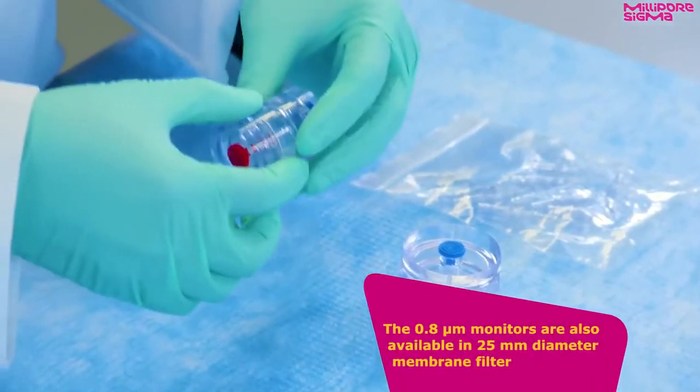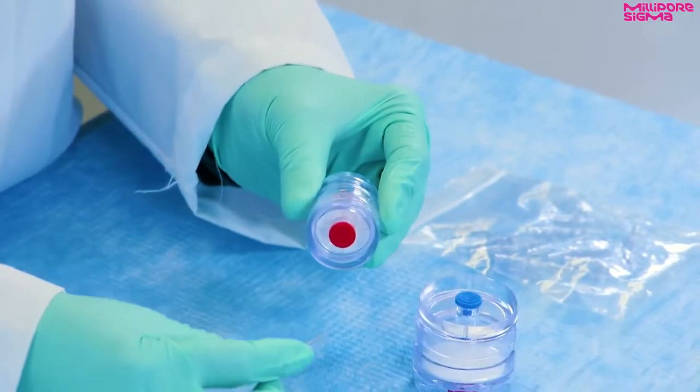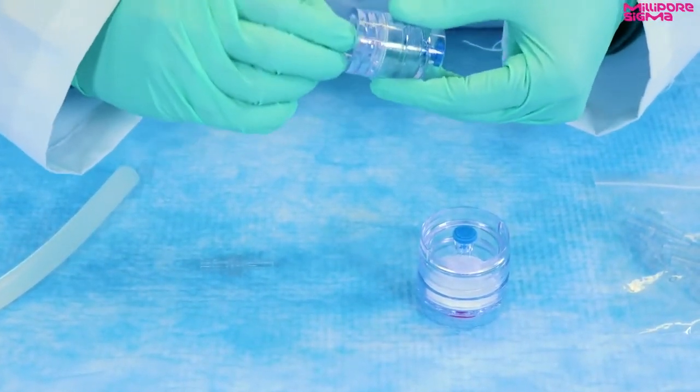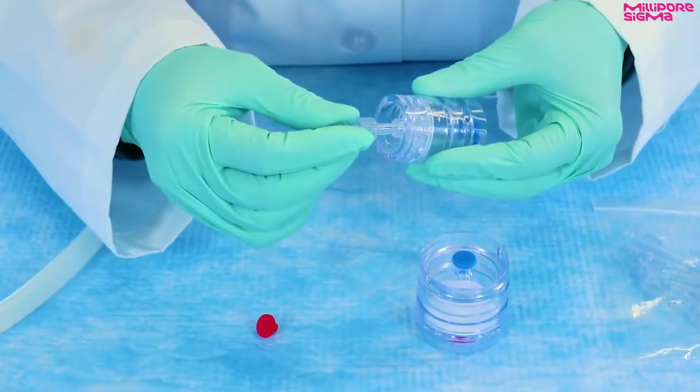Send the air monitor to the lab for analysis such as gravimetric, microscopic, or analytical. The 0.8 micron monitors are also available in the 25 millimeter diameter membrane filter size, and the 25 millimeter monitors come with a plastic hose barbed adapter.